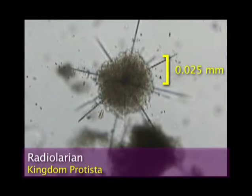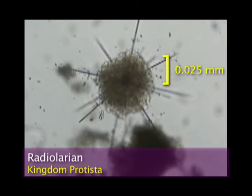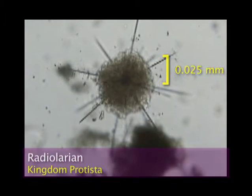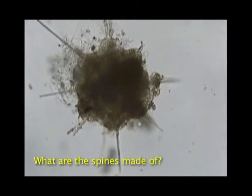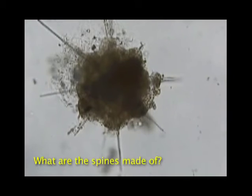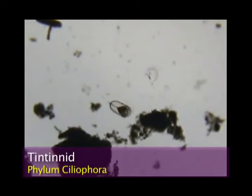Radiolarians are identified by their long spines. Another distinctive unicellular organism is the tintinnid.